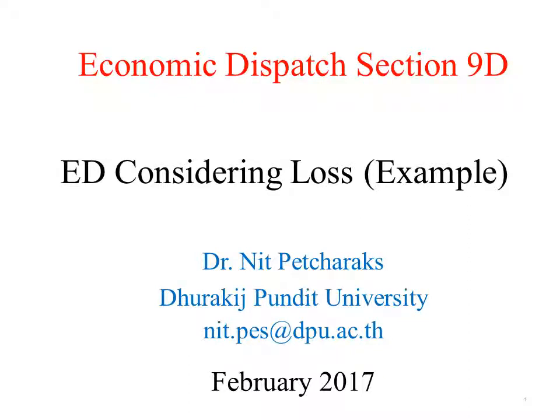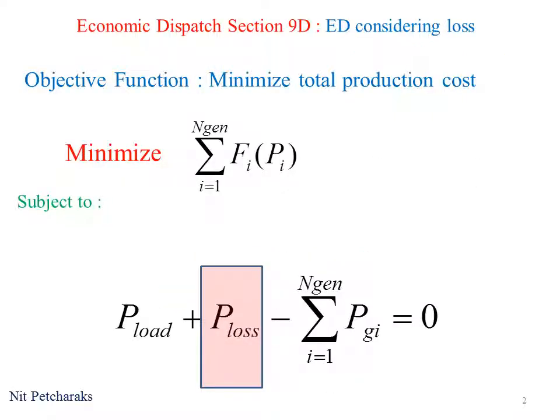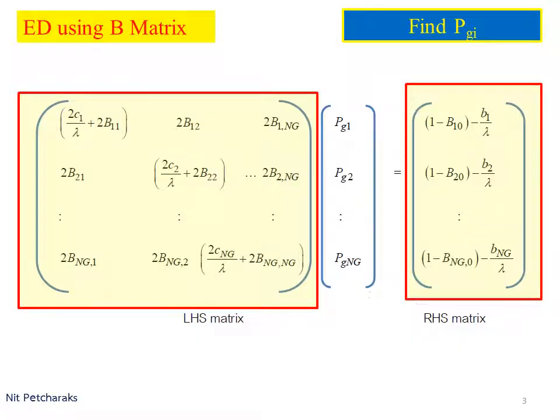Welcome to economic dispatch section 9D. We will learn economic dispatch considering power loss by doing an example. The objective function is to minimize total production cost subject to power balance constraint. We must find lambda and B matrix.